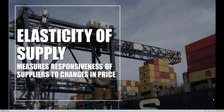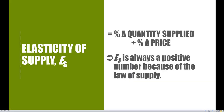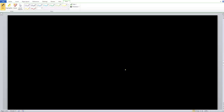When we have a formula for the elasticity of supply, it's going to be the same one we've seen: the percentage change in quantity supplied divided by the percentage change in price. Elasticity of supply is denoted with the shorthand ES, and the midpoint formula is going to be very apparent within this elasticity as well.